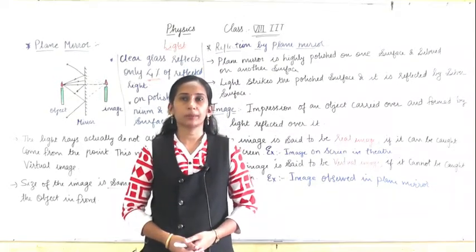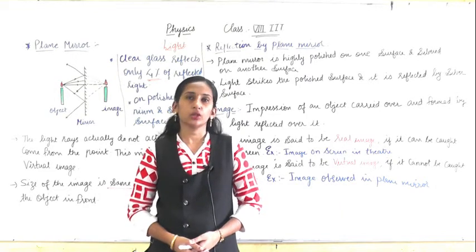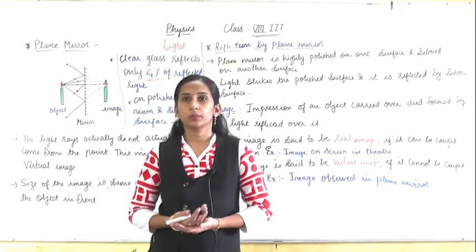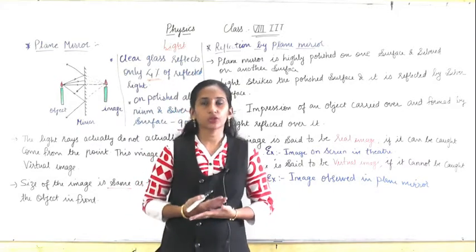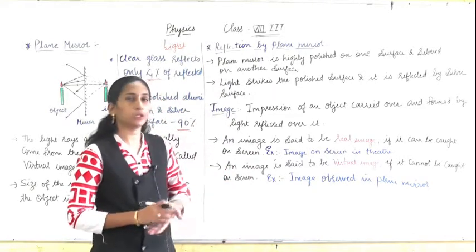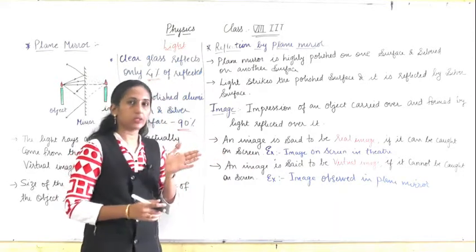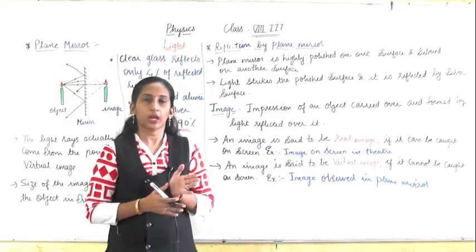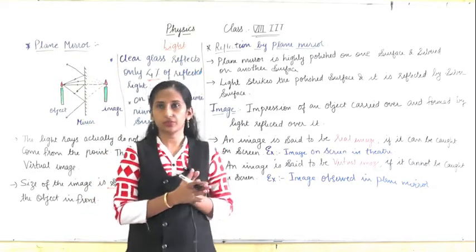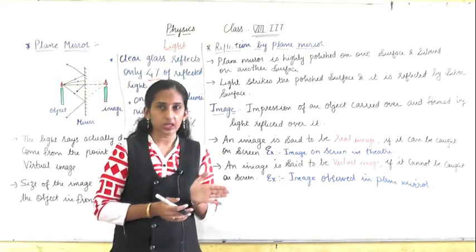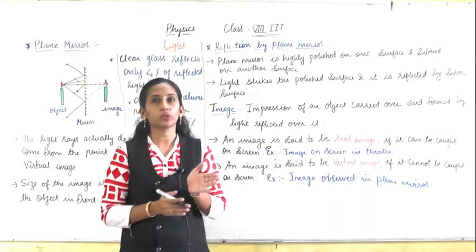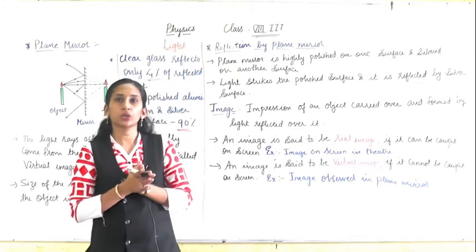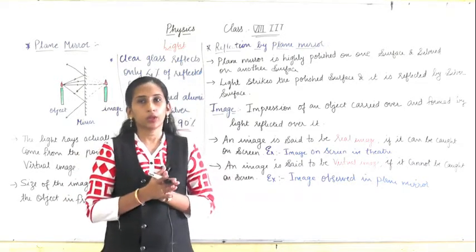Good morning students, today we are going to study about the plane mirror. What is a plane mirror? In your house you have seen mirrors attached on your cupboards or mirrors you use to see yourself — those are plane mirrors. Now, what is a mirror? A plane mirror has two sides: one side is highly polished glass, and behind that a silver coating is applied to that glass, making it a plane mirror which we use in our daily life.